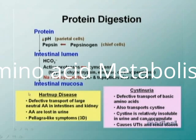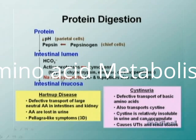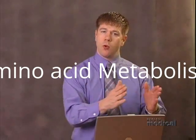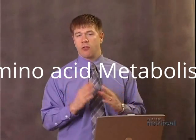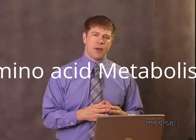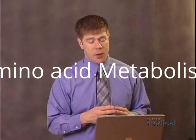Within the intestinal mucosa, amino acids are absorbed in dipeptide, tripeptide, and monoamino acid form via a sodium-amino acid symporter, very similar to what we saw for carbohydrate metabolism. As sodium moves down its concentration gradient, amino acids are pulled into the intestinal mucosal cells — usually as single amino acids, though dipeptides and tripeptides are absorbed as well.